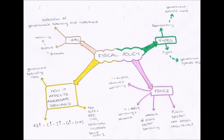So finally, how does fiscal policy affect aggregate demand? If the government were to run an expansionary fiscal policy and spend more, then aggregate demand is going to rise. And this is not only because government spending will rise — the G in our formula will rise — but also consumption and investment will rise as the multiplier effect takes place.